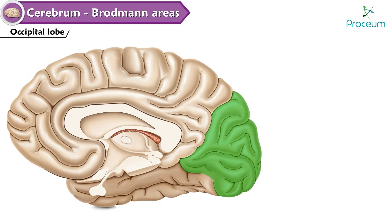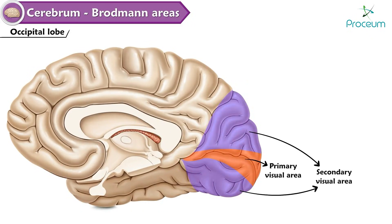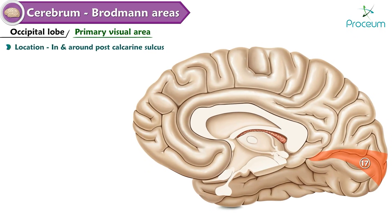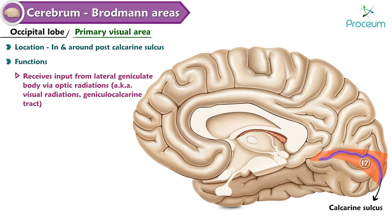Occipital lobe. It is divided into the primary visual area and secondary visual area. Primary visual area — Area 17. Location: in and around the post-calcarine sulcus. Functions: receives input from the lateral geniculate body via optic radiations (also known as visual radiations or geniculocalcarine tract); perception and reception of visual impressions.